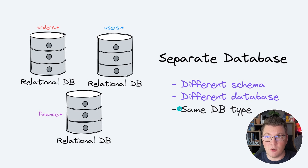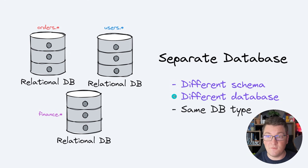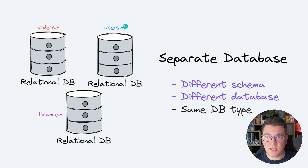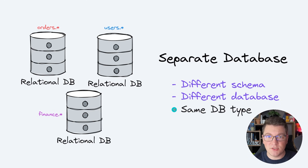The next level of data isolation, if you need to take it further than the logical isolation that schemas give you, is still using different schemas but also using different physical databases to store the data for your modules. So now we have the order schema living in its own database, the user schema living in its own database, and the finance schema in its own database — however we are still using a relational database for all of our modules.